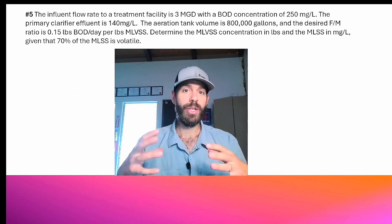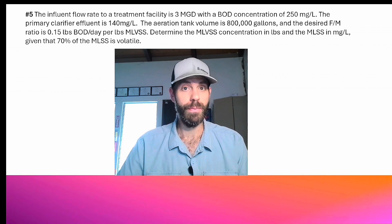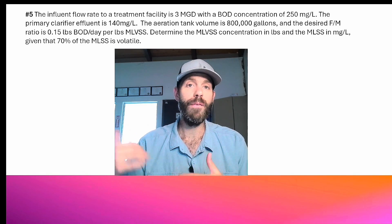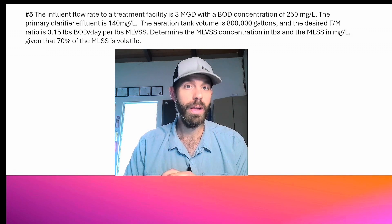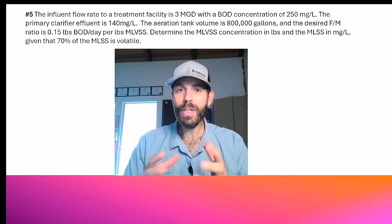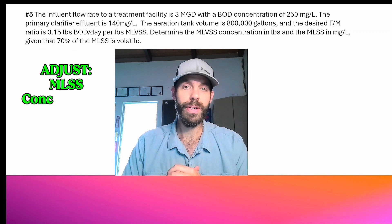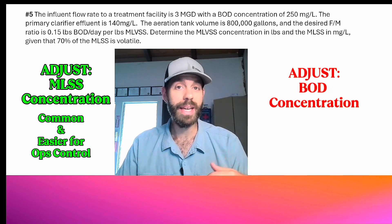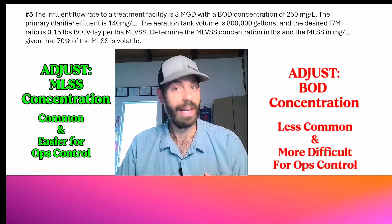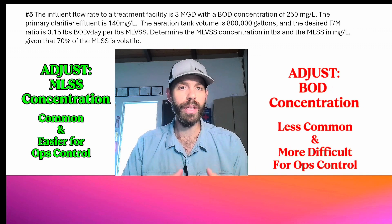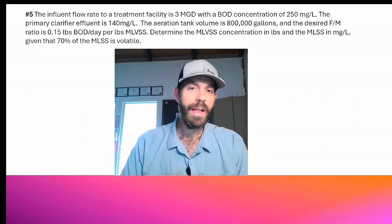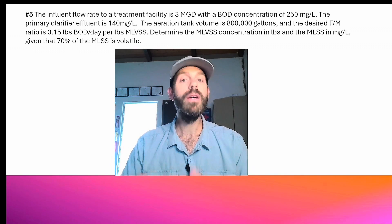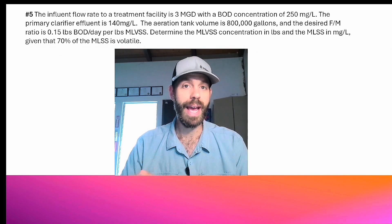So, 5,000 milligrams per liter — what now? There are a few things we can do to actually adjust the food to microorganism ratio if we need to. The MLSS concentration is going to be more common and easier to adjust. The BOD adjustments would be harder and less common. An operator has a few tools at their disposal for adjusting MLSS: the return activated sludge rate and the wasting rate. I'm going to be doing separate videos on both of those.